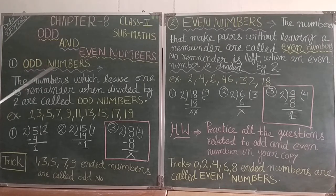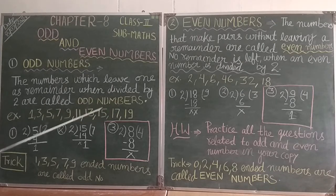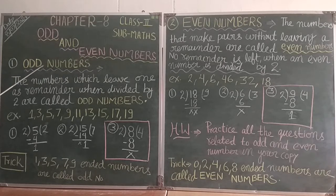So first, what is odd numbers? The numbers which leave one as remainder when divided by 2 are called odd numbers. When we divide a number by 2 and check what comes in the reminder, if the remainder is one, that number is called an odd number.